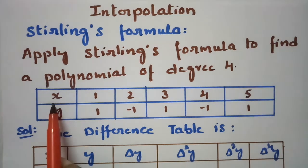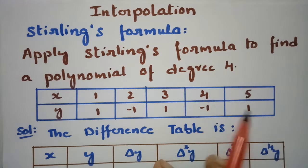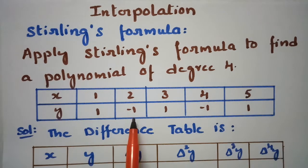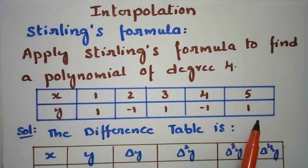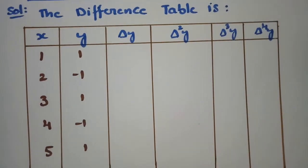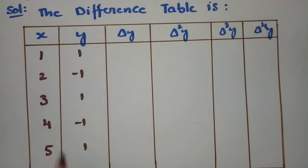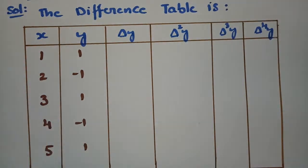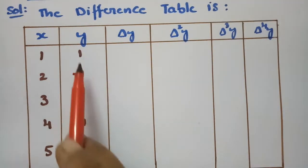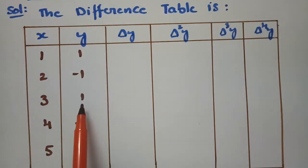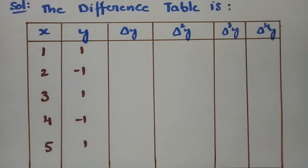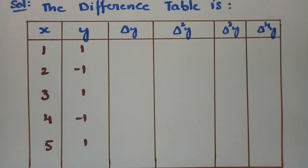These are the x values: 1, 2, 3, 4, 5 and the y values are 1, minus 1, 1, minus 1, and 1. So the difference table here is: x values 1, 2, 3, 4, 5 and y values 1, minus 1, 1, minus 1, 1. We have to create this difference table.